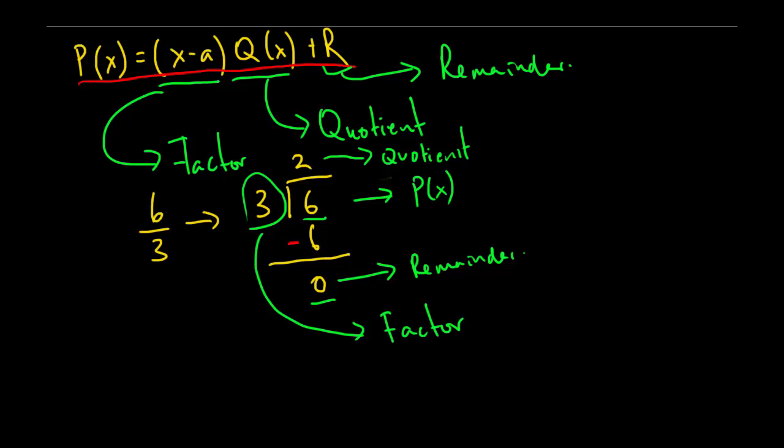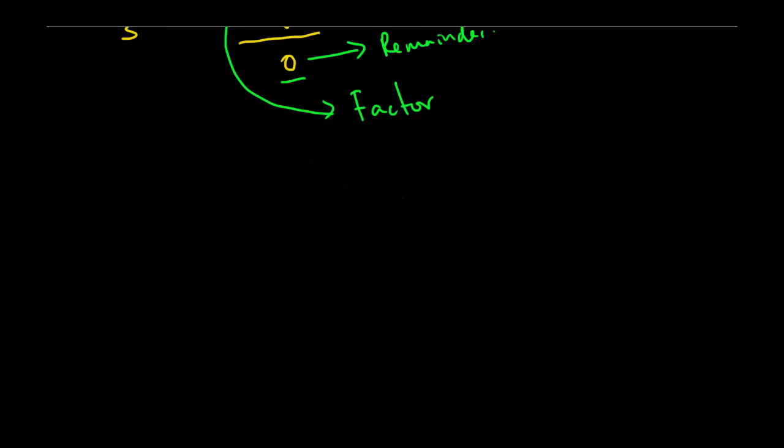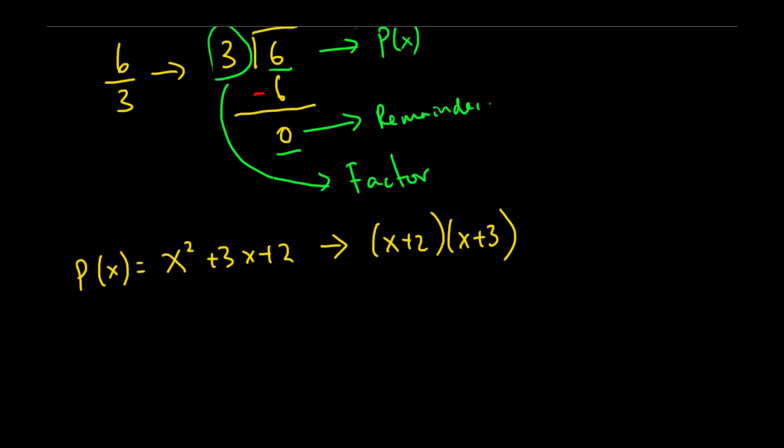So what is this useful? This is very useful if you are dividing polynomials with a factor. So let's look at an example. If I say p(x) is equal to x squared plus 3x plus 2. Now we all know that this will divide into x plus 2 and x plus 3. Let's just see if I can use that long division and come up with the other root.